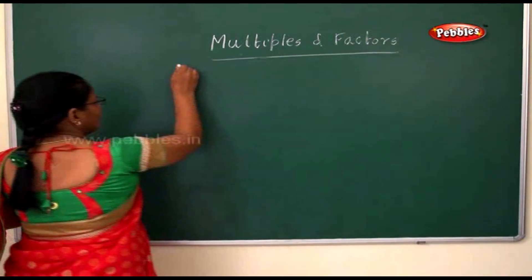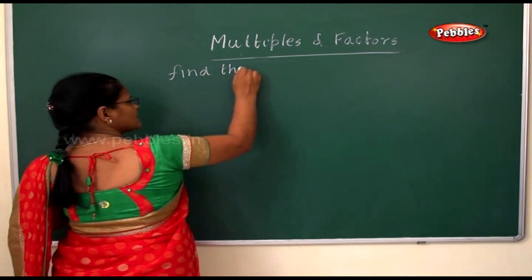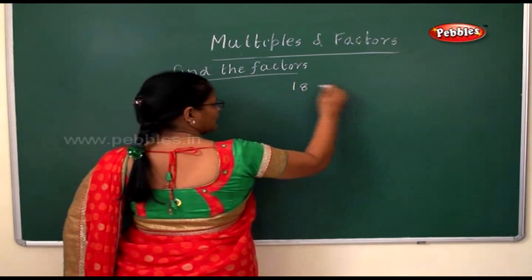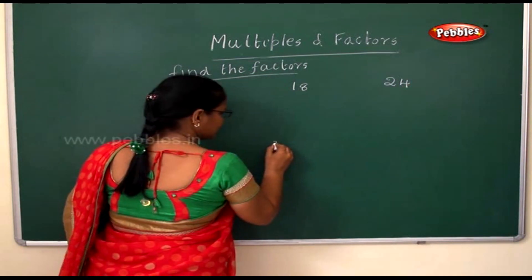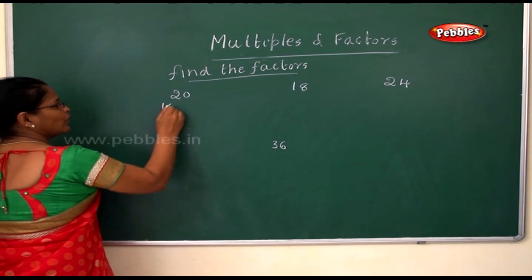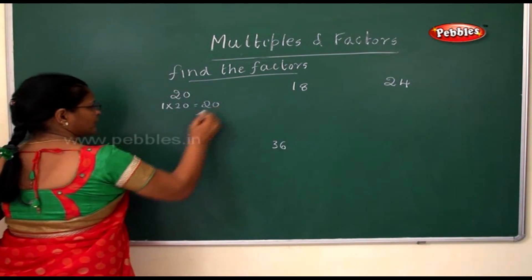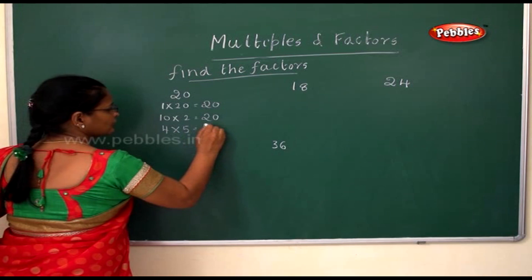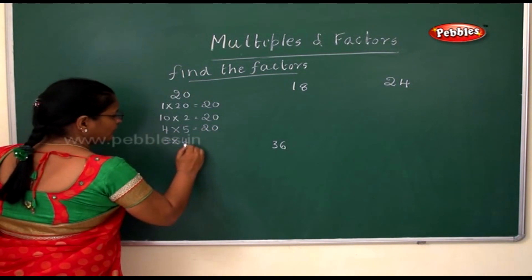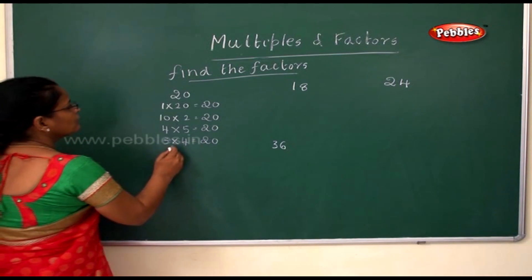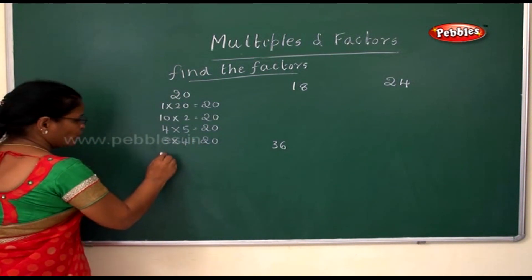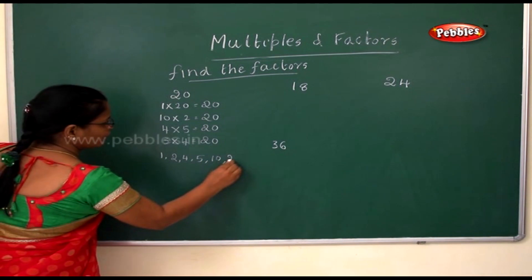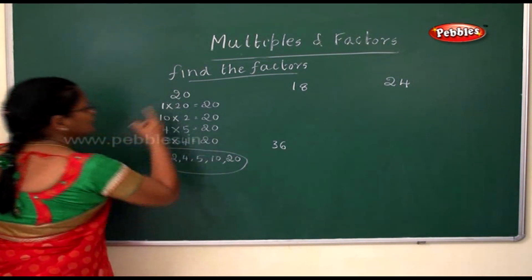Now let's find the factors of twenty, eighteen, twenty-four, and thirty-six. For twenty: one twenty is twenty, ten twos are twenty, four fives are twenty. So the factors for twenty are one, two, four, five, ten, and twenty.